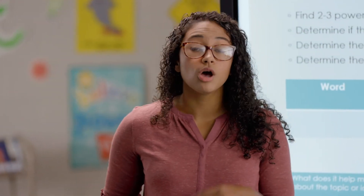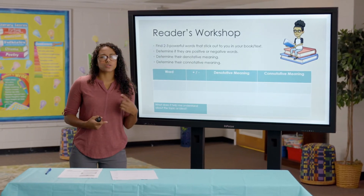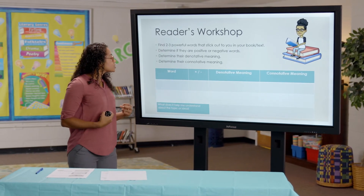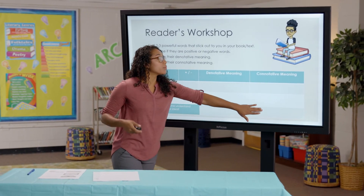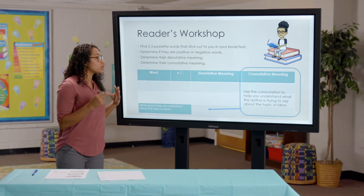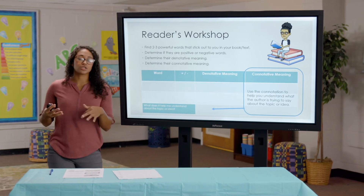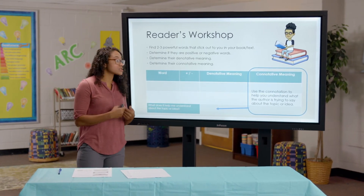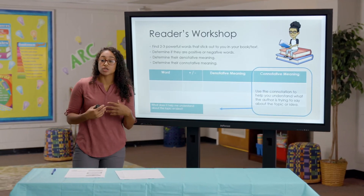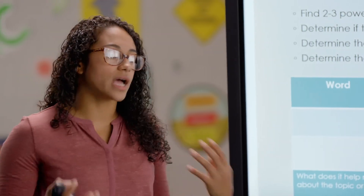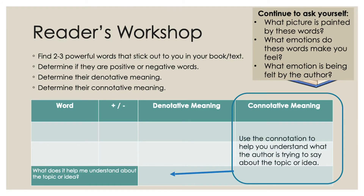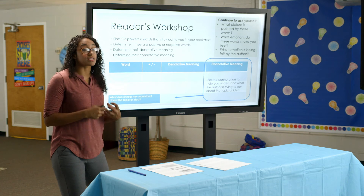Now I want you to try this same skill with a book of your choice. While you're reading, look for two or three really powerful words. Ask yourself: is it used in a negative or positive way? What is the literal meaning of the word? And what is the emotional meaning? Then look at that connotation or emotional meaning and ask yourself: what is the author trying to get you to understand about the topic or idea? We used the connotation to help us understand what the author wanted us to know about doubt — you're going to do the same. Ask yourself: what picture is painted by these words? What emotions do you feel, and what emotions are conveyed by the author based on the words they use?